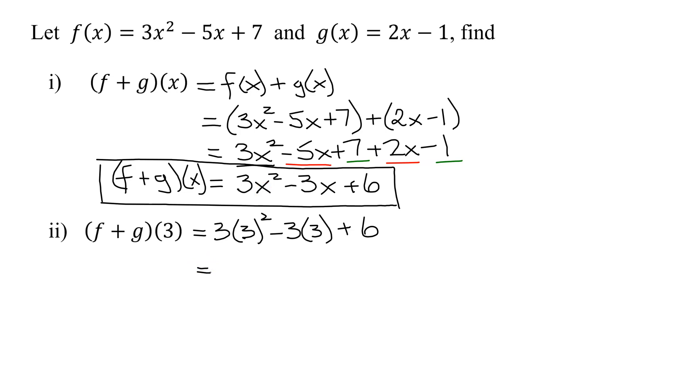Now order of operations. The first thing you have to do is the squaring. So it's going to be 3 times, 3² means 3 × 3 is 9, minus 3 × 3 + 6. Now I can do my multiplication and divisions working from left to right. So 3 × 9 is 27, minus 3 × 3 is 9, plus 6. So now 27 - 9 is 18, 18 + 6 is 24. So my sum function (f + g) evaluated at 3 is equal to 24.